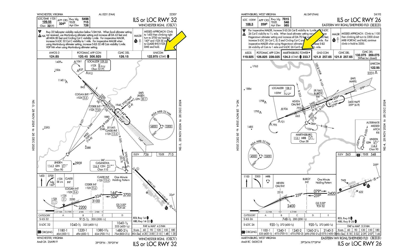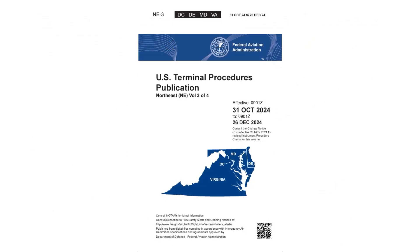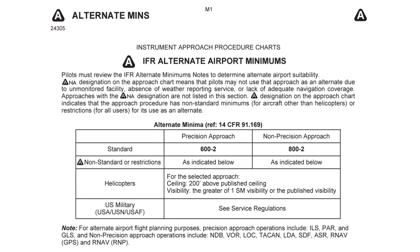It's not common to see an ILS approach at a non-towered airport. For all questions like this, we want to reference the Terminal Procedure publication. On page one of the alternate minimums section, it mentions that approaches with the ANA designation can't be used as an alternate. The reasons for this are because of an unmonitored facility, the absence of a weather reporting service, or a lack of adequate navigation coverage.